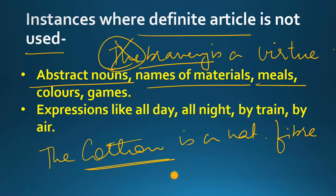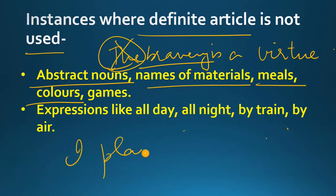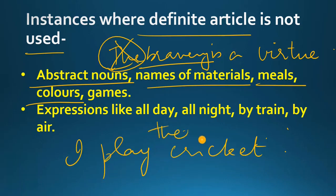Similarly, meals — like 'I just had my breakfast' — we will not say 'I have just had the breakfast.' कोई भी meal है — breakfast, lunch, dinner, tea — उससे पहले 'the' नहीं आएगा. Colors — for example, 'Grass is green in color' — you will not say 'grass is the green in color.' Color के आगे भी 'the' use नहीं होगा. ऐसे ही अगर कोई game है — for example, 'I play cricket' — I will not say 'I play the cricket.' किसी भी game या sport के नाम से पहले 'the' नहीं आएगा.